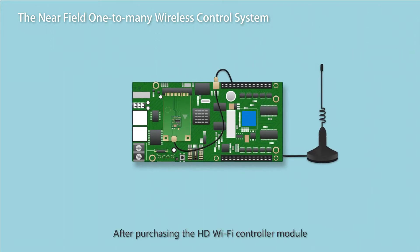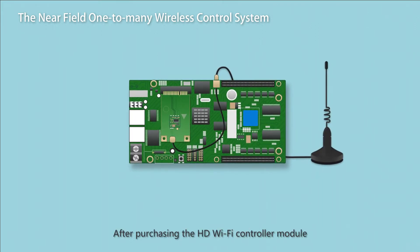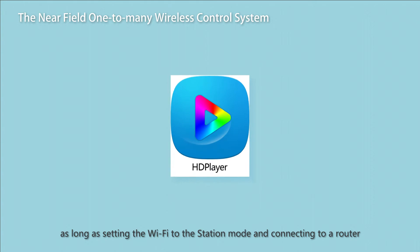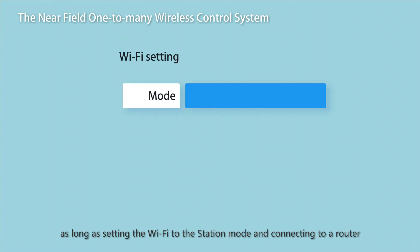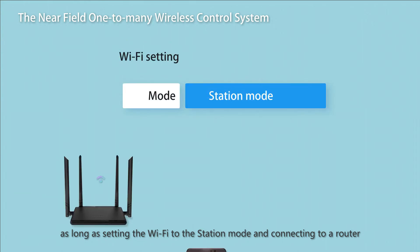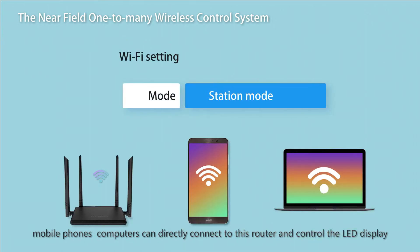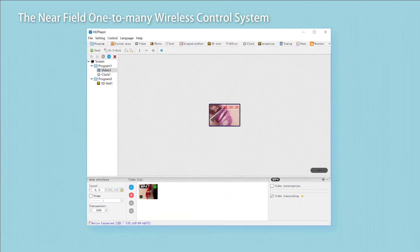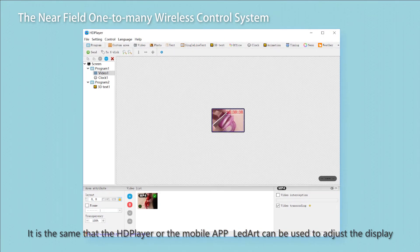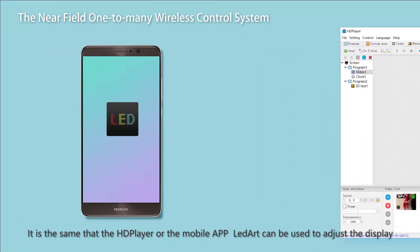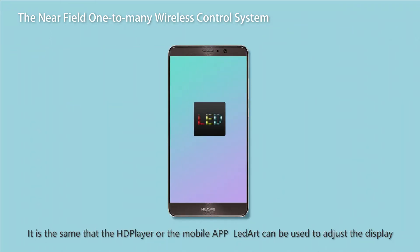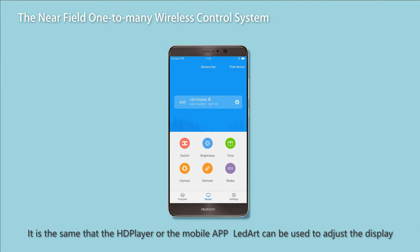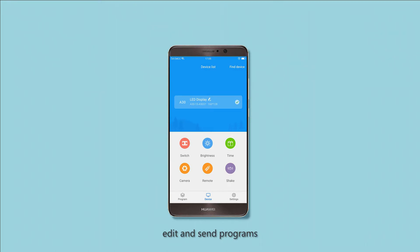After purchasing the HD Wi-Fi Controller Module, set the Wi-Fi to Station Mode and connect to a router. Mobile phones and computers can then directly connect to this router and control the LED display. HD Player or the mobile app LED Art can be used to adjust the display, edit, and send programs.